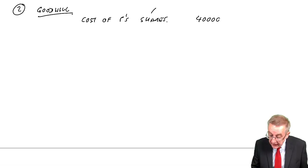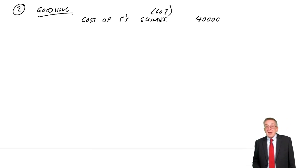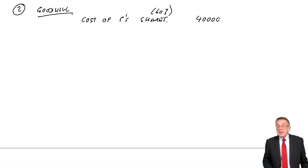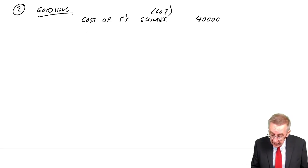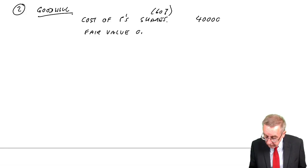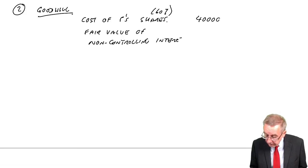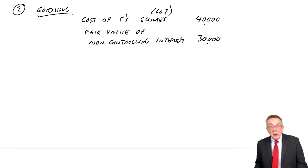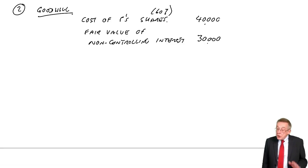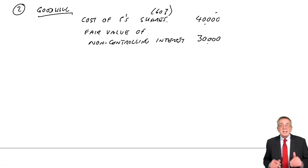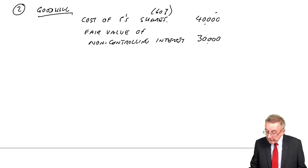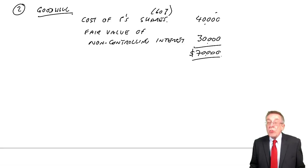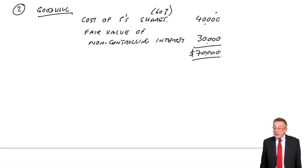Remember, that was only the value being placed on 60% of S. What about the other 40%? Almost certainly you'll be given the figure. The fair value of the non-controlling interest — the other 40% — the question tells us it was 30,000. If you're not given a figure, you'd say our 60% is worth 40, therefore the other 40% is 40/60ths of 40. But almost without question, you'll be told the fair value.